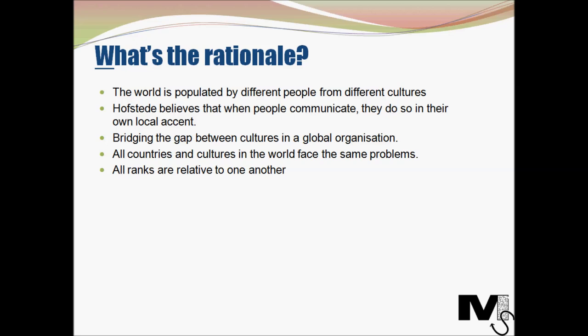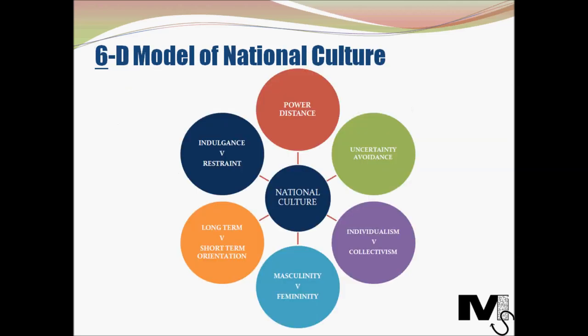Hofstede believes that all countries and cultures in the world face the same problems, and these problems can be categorized into six parts, which constitute the 6D model we're going to look at. It's important to note that the rankings in each dimension are not absolutes — they are subjective and relative to one another. Now let's look at the 6D model graphically and examine each dimension in detail.